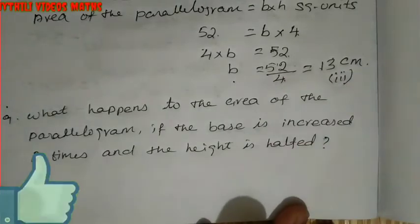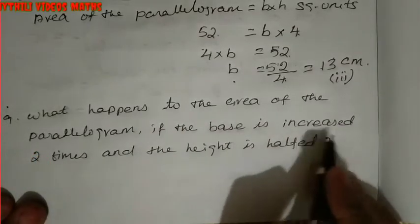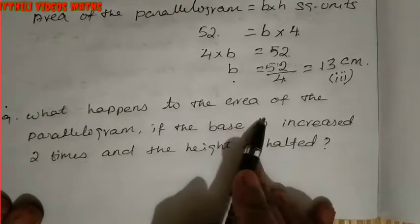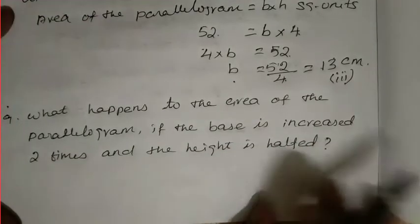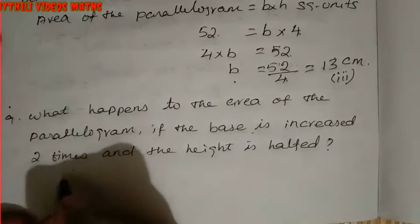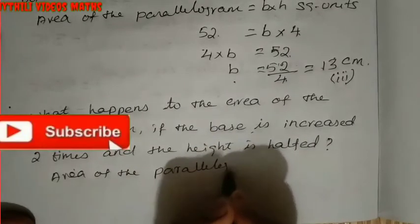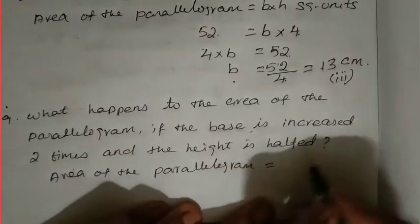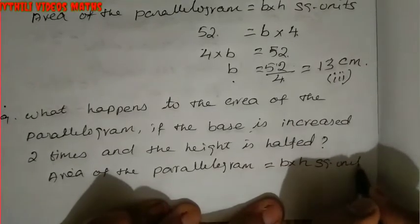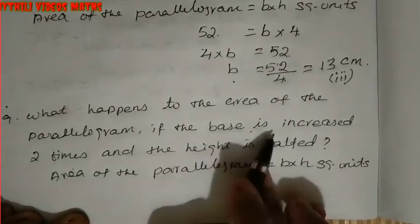The ninth sum: what happens to the area of a parallelogram if the base is increased two times and the height is halved? Write the formula first. Area of the parallelogram = b × h square units. Now base is increased two times, so new base = 2 × old base.